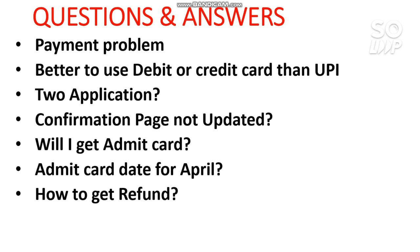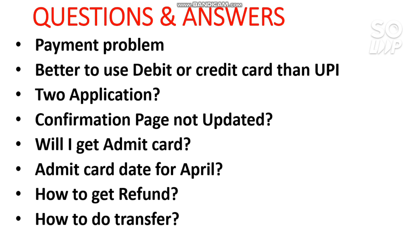For the refund — if you want a refund for the April attempt, just untick the April attempt and you will get the refund. You don't need to send any mail to NTA. Just untick and you will get the refund. But if you get the admit card for the April attempt, you will not get the refund. For the February attempt, there is no refund or transfer. For March, if you have done the untick process, you will get the refund. If you unticked the March attempt and took another attempt — April or May — you can transfer those funds to the next attempt.